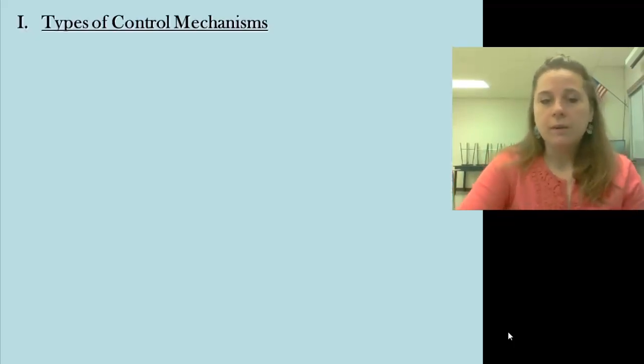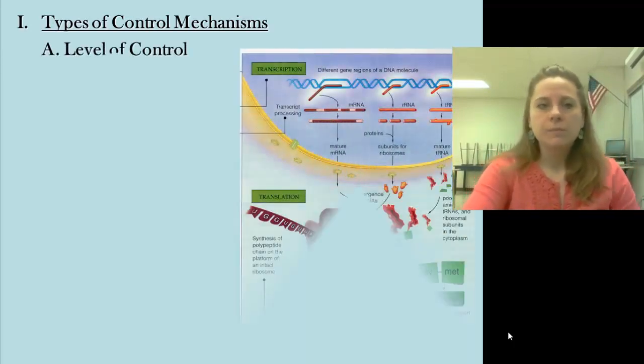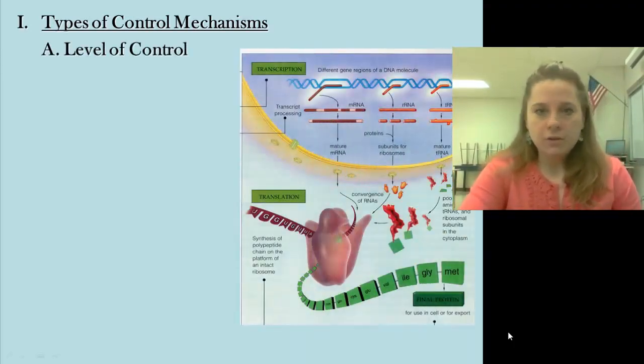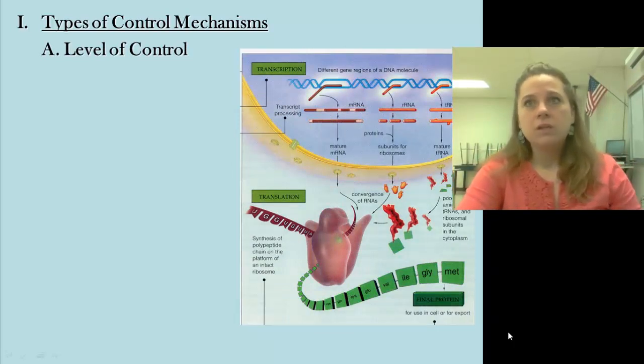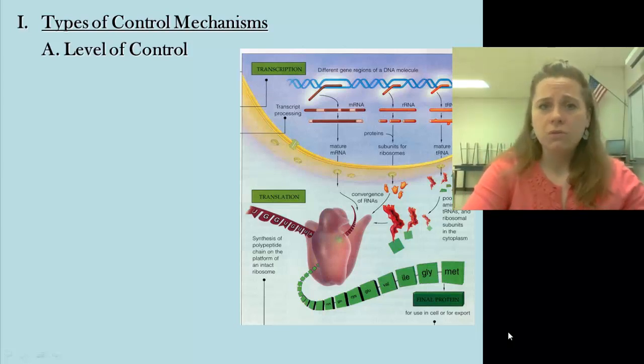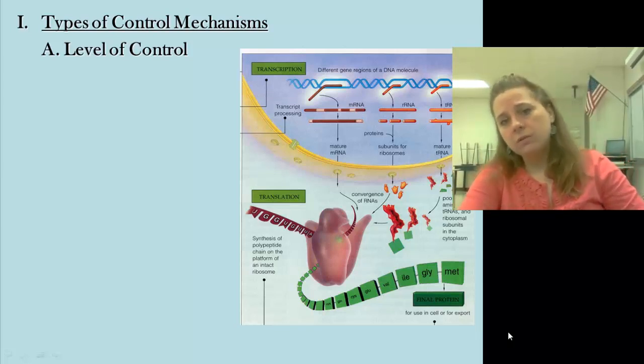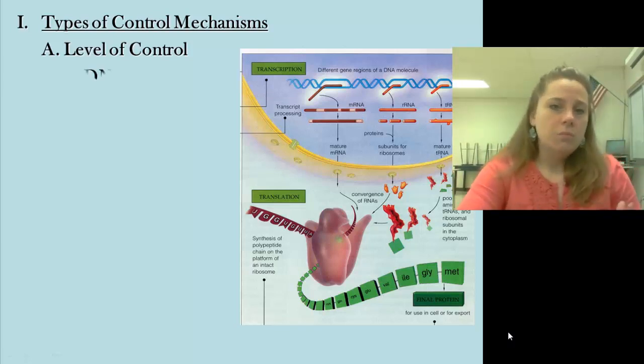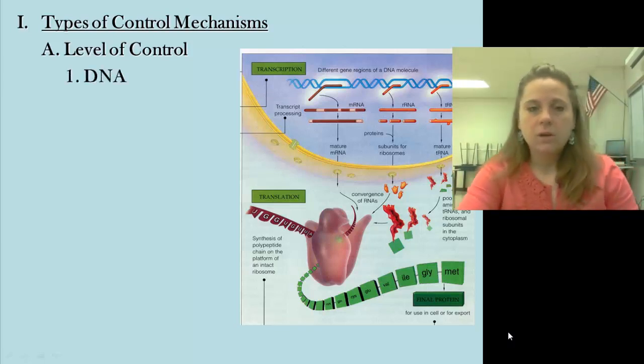So types of control mechanisms. We're going to get kind of an overview before we get into the specifics of how genes are actually controlled. Multiple levels of control. Because remember, creating a protein has multiple steps. So it depends on where are you going to control that. Are you going to control it at the gene level? Are you going to control it at the transcript level? Are you going to control it at the ribosome? So tons of ways that we can look at it.